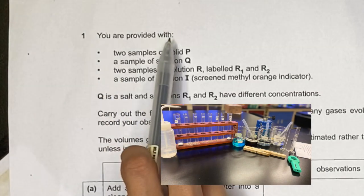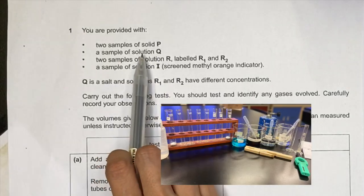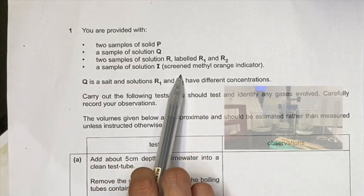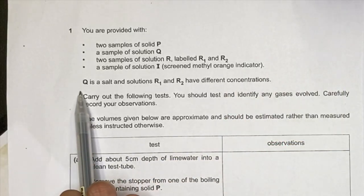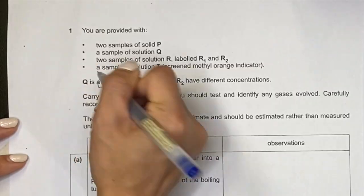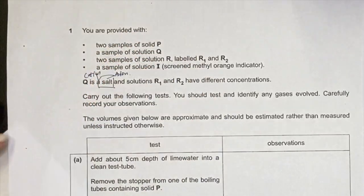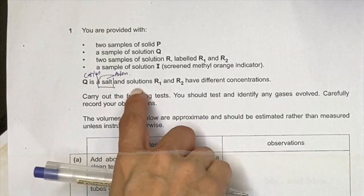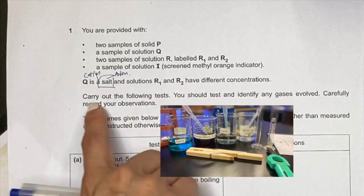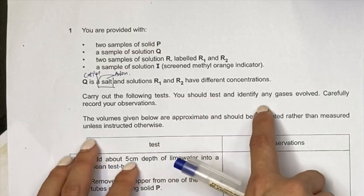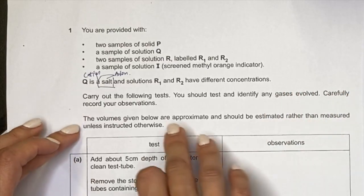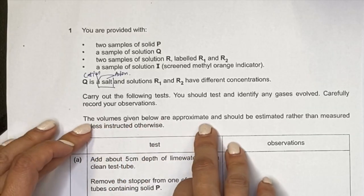The question states: you are provided with two samples of solid P, a sample of solution Q, two samples of solution R labelled R1 and R2, a sample of screened methyl orange indicator. Q is a salt — I highlight that and remind myself it has a cation and an anion. Solution R1 and R2 have different concentrations. The instruction says to carry out the following tests, test and identify any gases evolved, and carefully record observations.